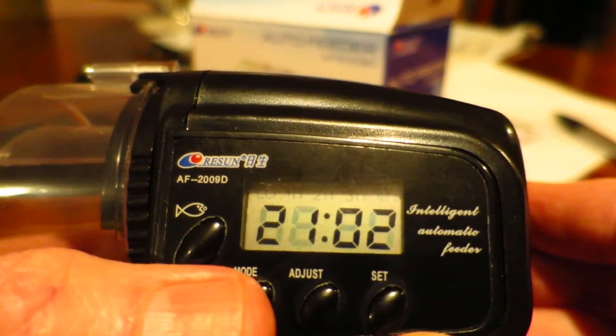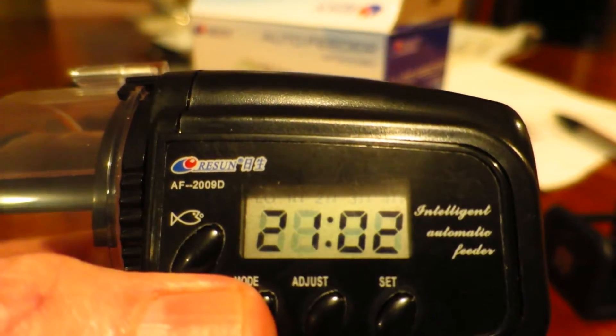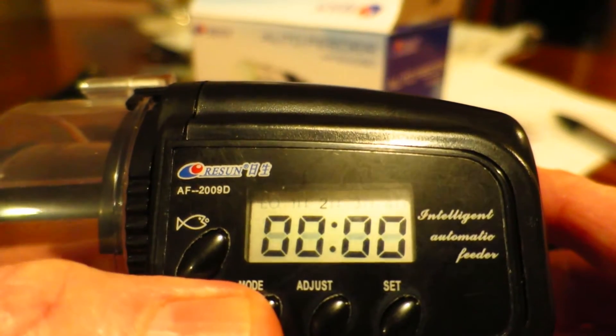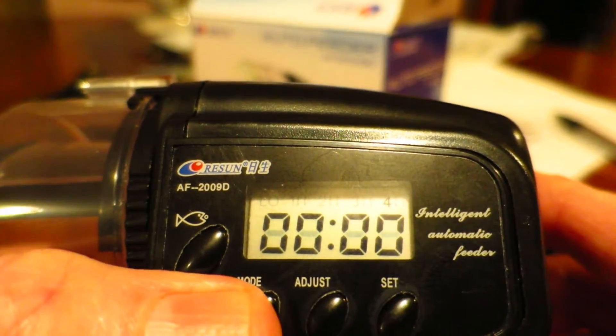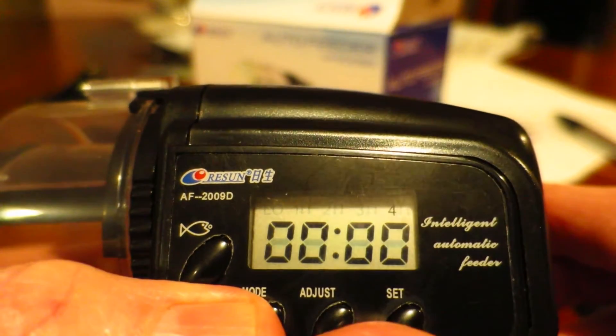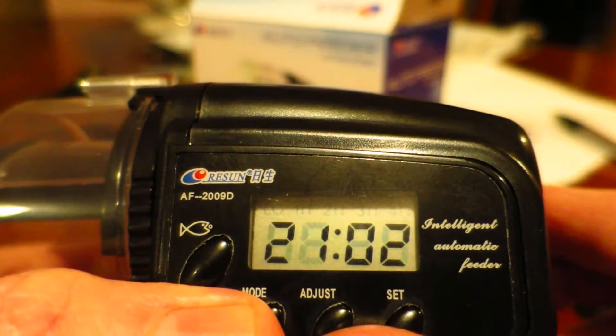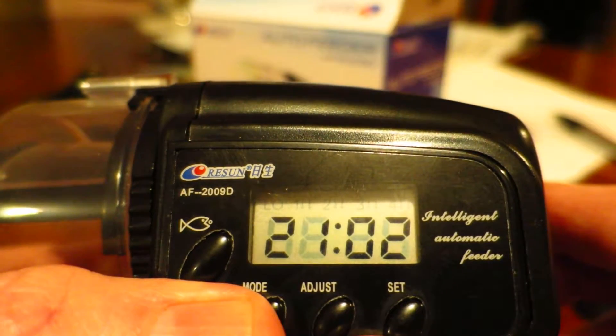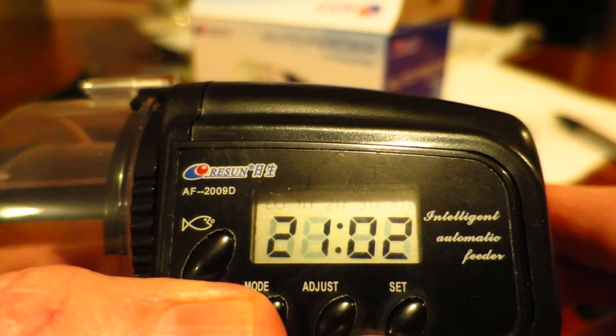And then you can move to your different modes with the different timers, so again, one, two, three, four. And then if you, you can see that the colon isn't flashing, so we know that we're in a timer mode, and then once the colon flashes, this is the current clock time. So, it's 21:02 on the clock.